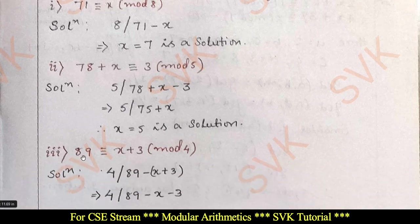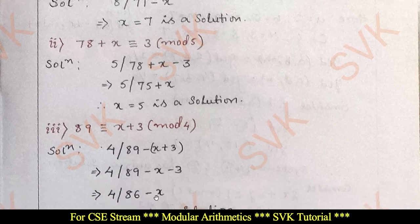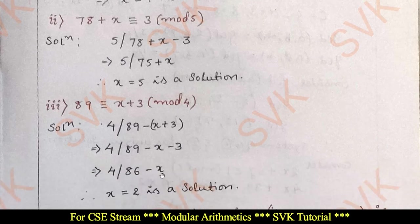Moving on to the third question: 89 ≡ x + 3 (mod 4). Here, 4 divides 89 minus (x + 3), which gives 89 − x − 3. For what value of x will this be divisible by 4? By giving x equal to 2, it will be divisible by 4 — that is the required solution.